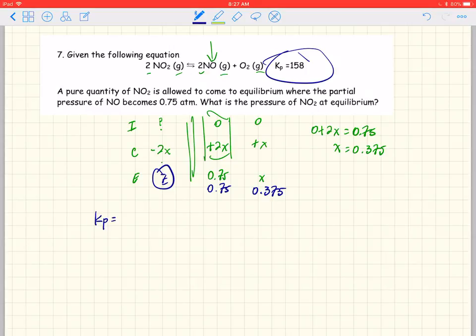Kp is equal to products over reactants. So it's NO squared. Remember we use the coefficients as powers. Oxygen. NO squared. NO2 squared. And we substitute that all in and calculate NO2.